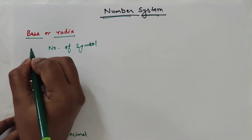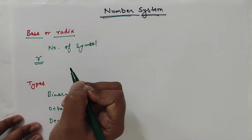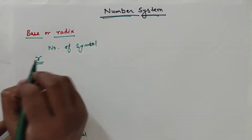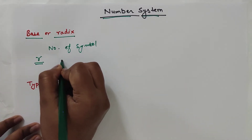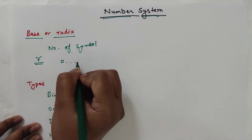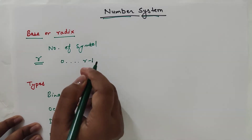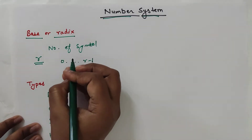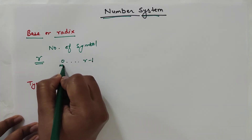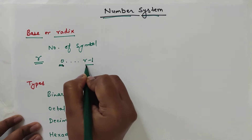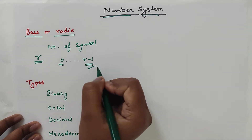Suppose the base of a number system is r, then we can use r number of symbols for representation of any number in that number system. The symbols will start from zero and go up to r minus 1. So the minimum value of a digit will be 0 and the maximum value will be r minus 1.